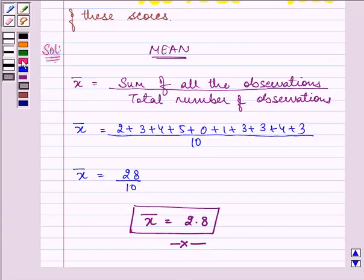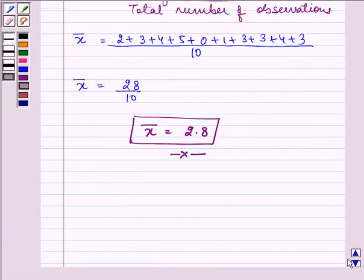In the second part, we need to find out the median. Now, median is the value of the given number of observations which divides it into exactly two parts. Here the data is arranged in ascending or descending order from this ungrouped data firstly. So let us arrange it into ascending order.